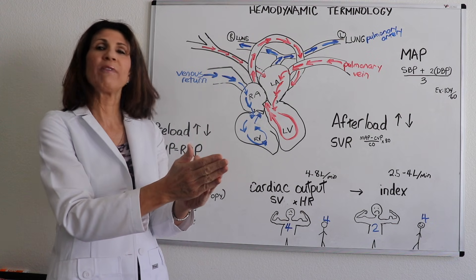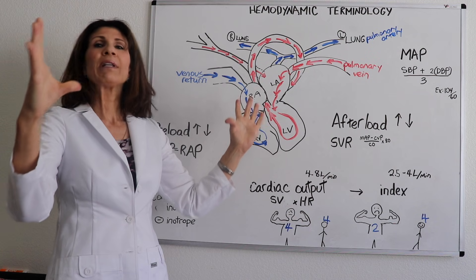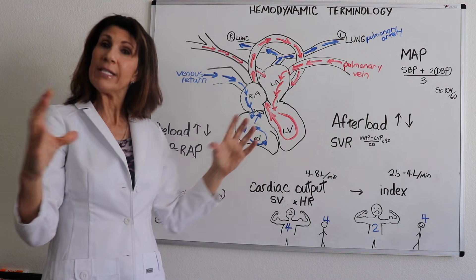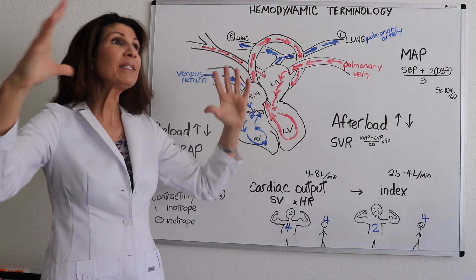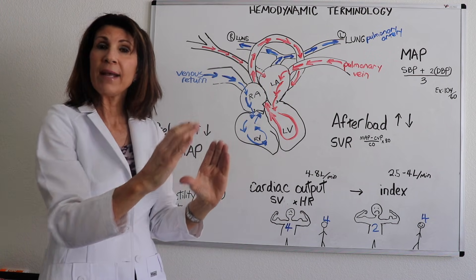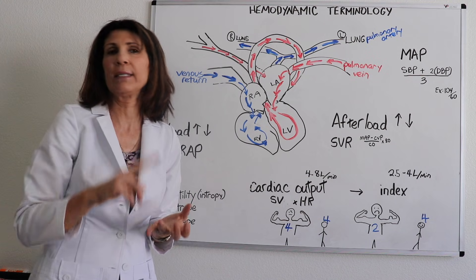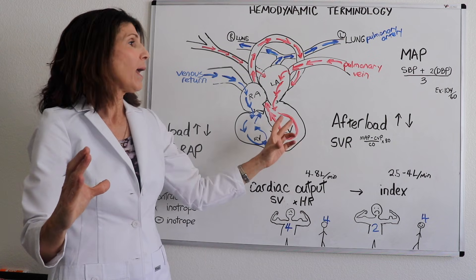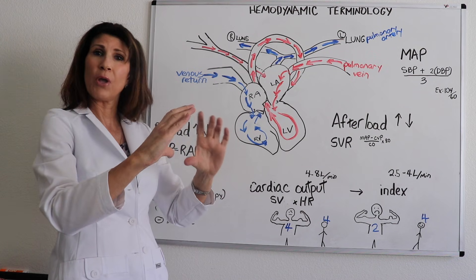Those ACE inhibitor 'pril' medications prevent the conversion of angiotensin I to angiotensin II, which is a vasoconstrictor, and they relax the vessel — that's an afterload reducer. Would we ever want to increase resistance? Absolutely — patients in distributive shock states like anaphylactic, septic, and neurogenic shock have wide open vascular spaces and we need to clamp down with vasopressor medications to increase afterload.